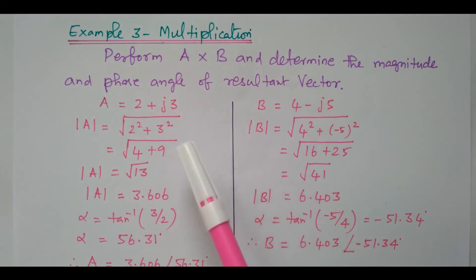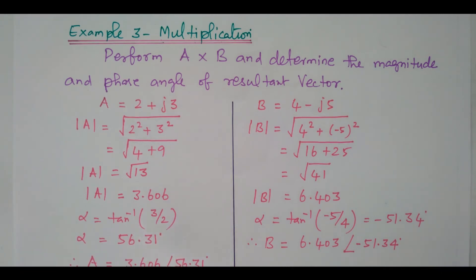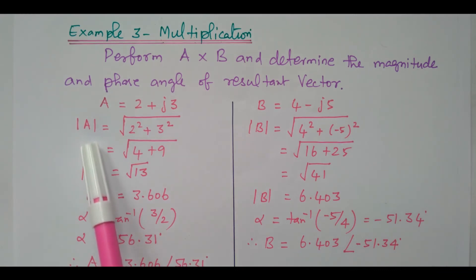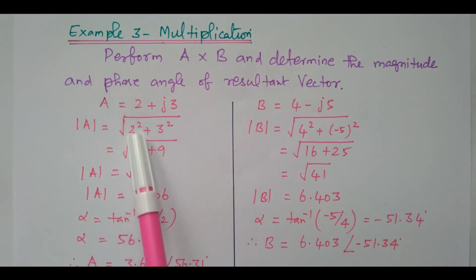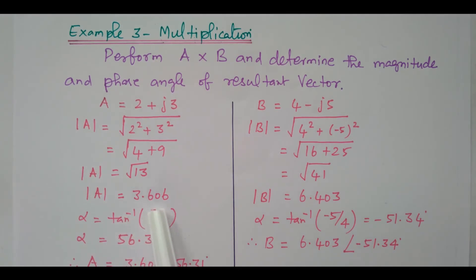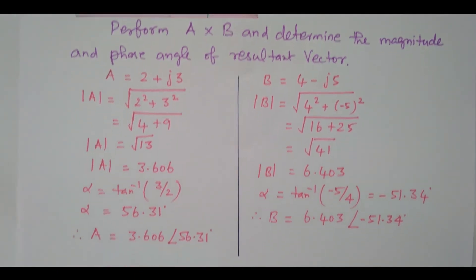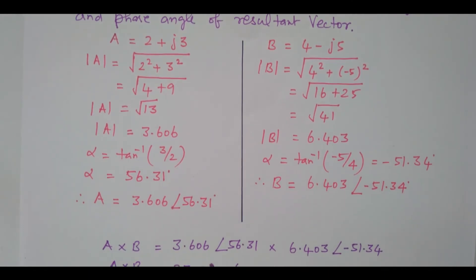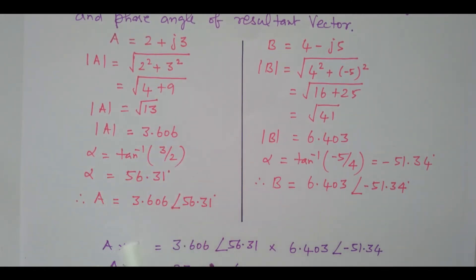Multiplication is possible in rectangular form also, but it is easier to convert into polar form. So how will you convert to polar form? The magnitude of A is nothing but square root of real term squared plus imaginary term squared. Real term is 2, imaginary term is 3. After simplification, we get 3.606. What is the angle? Tan inverse B by A — imaginary term divided by real term — 3 by 2 — it is 56.31.